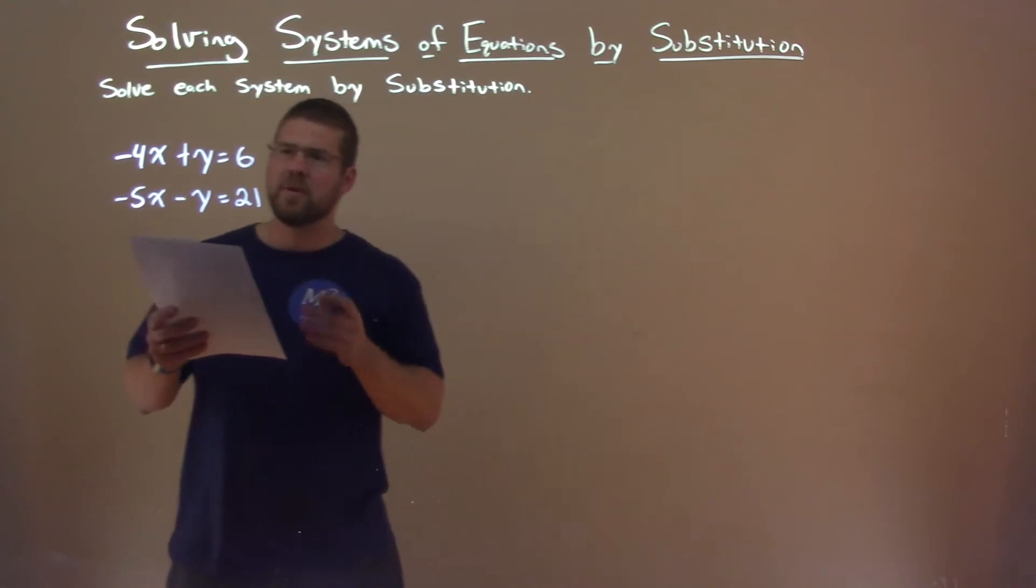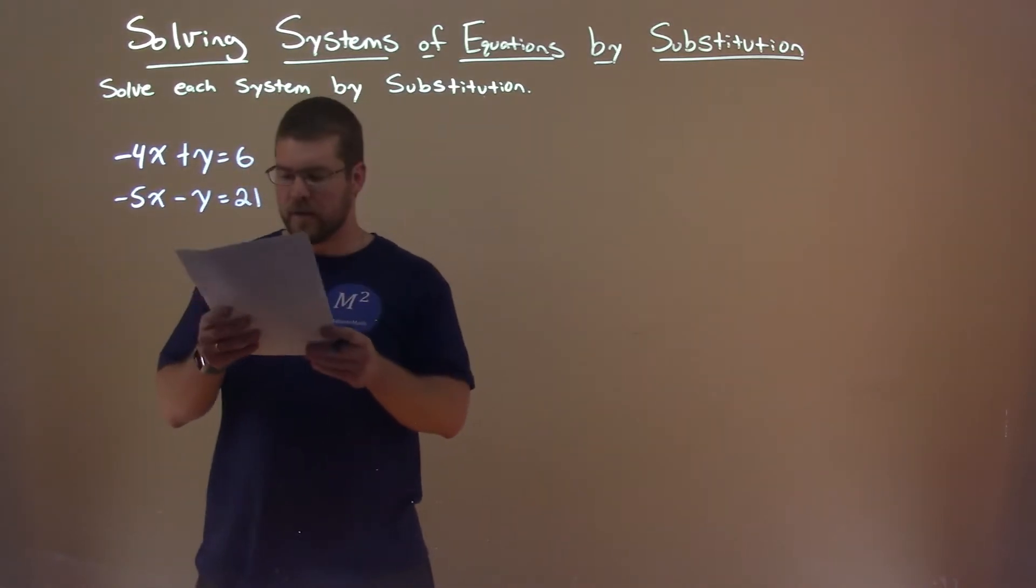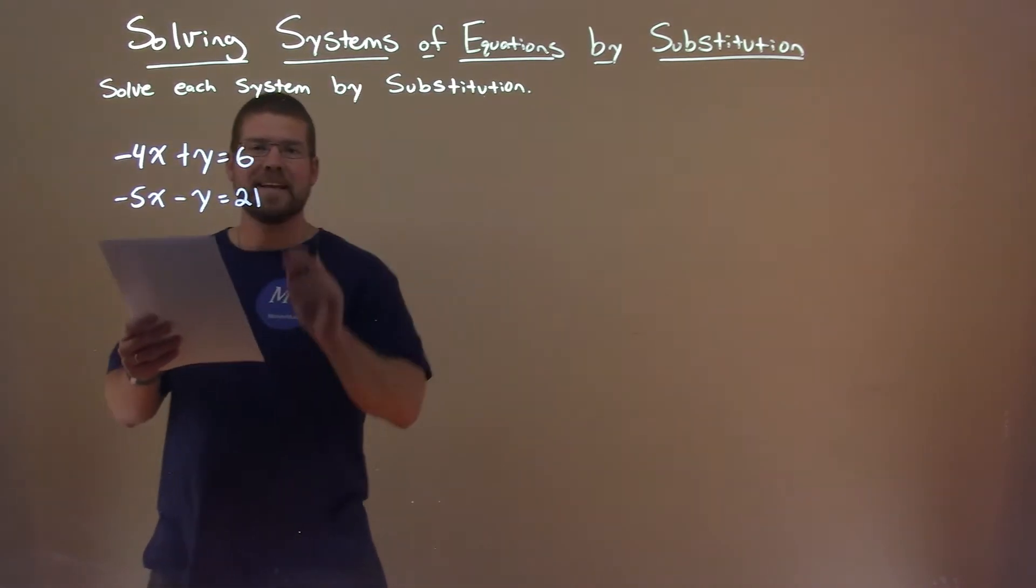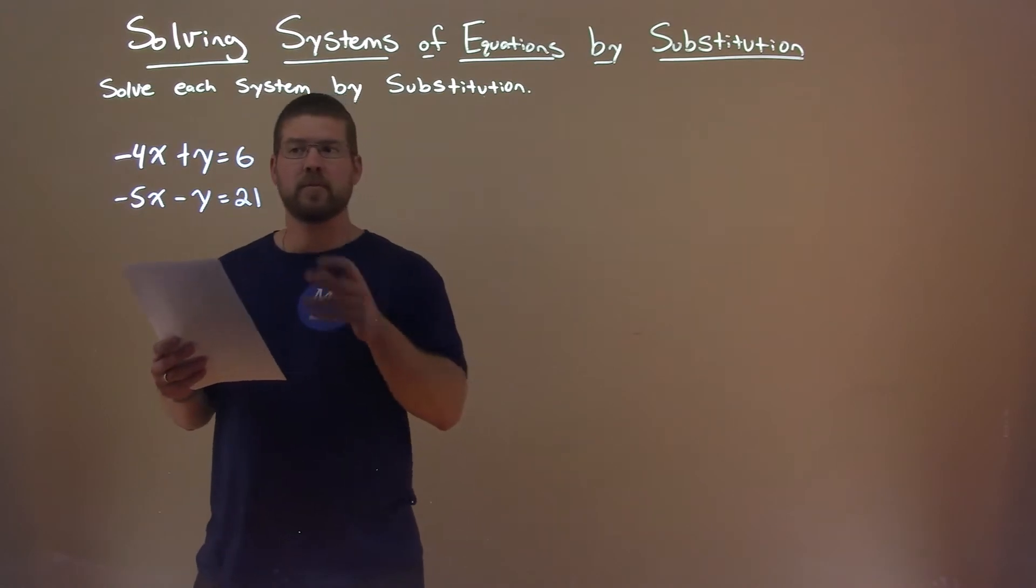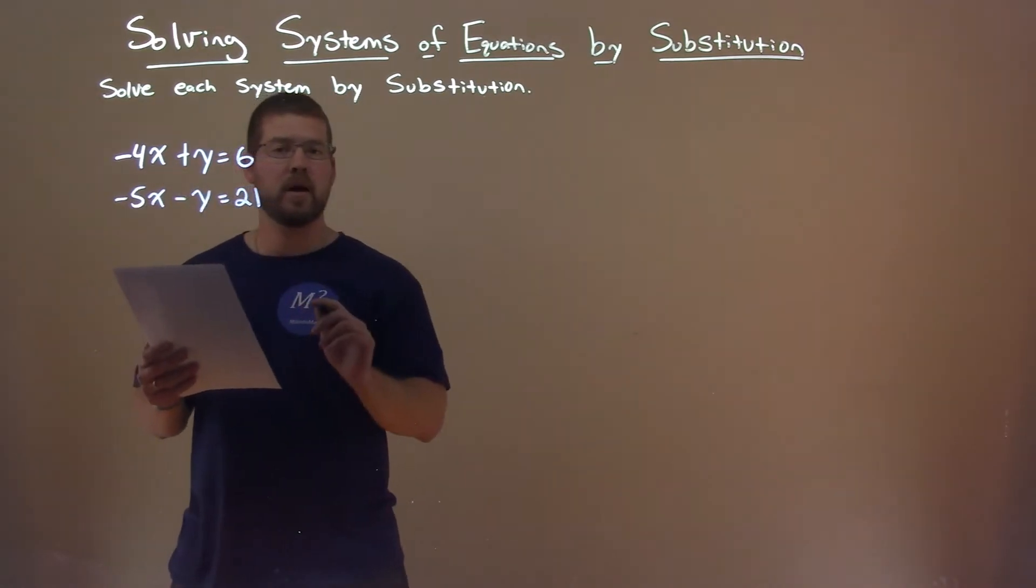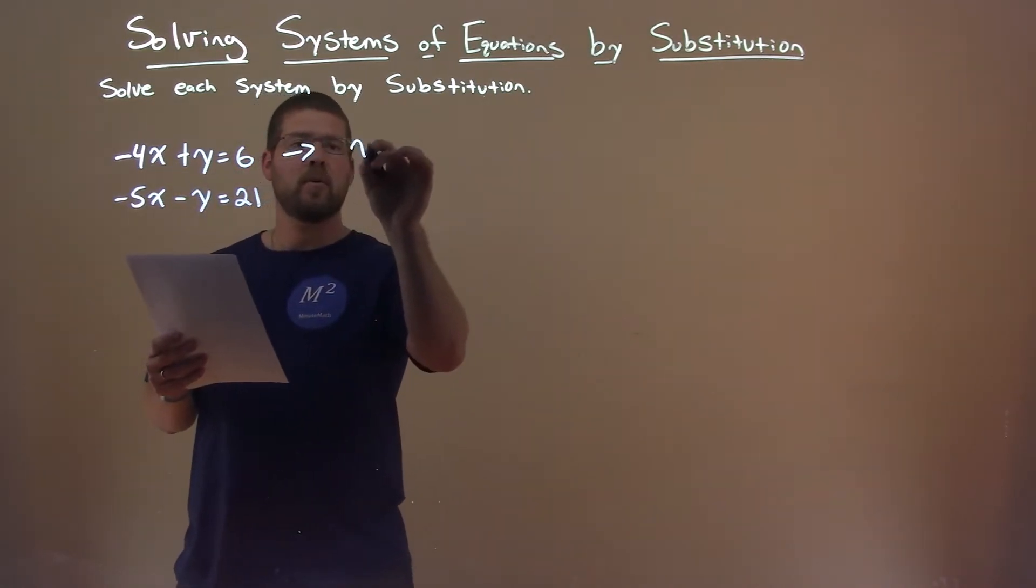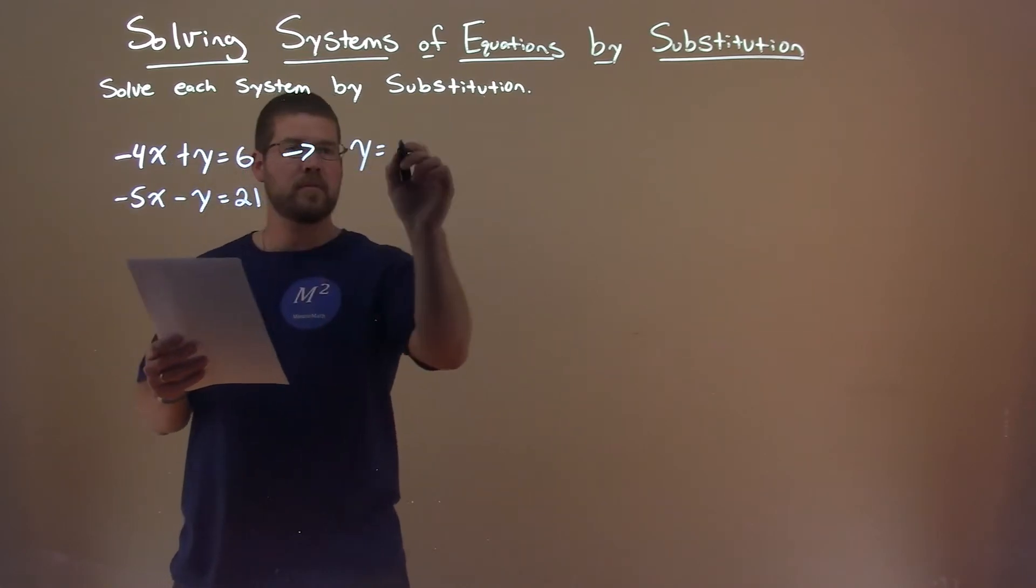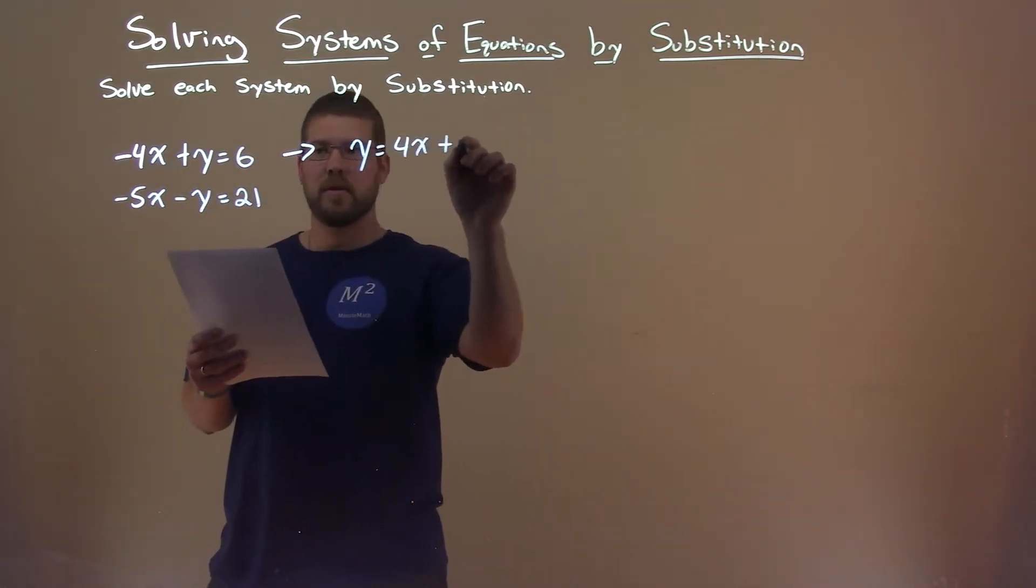Well, first thing here is, none of our equations have a variable by itself, but the first one I can easily get y by itself. To do that, I add 4x to both sides, so that gives us here y equals positive 4x plus 6.